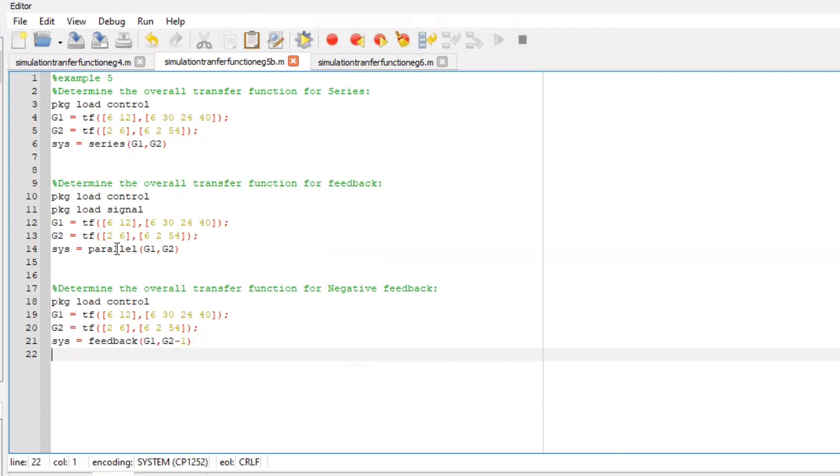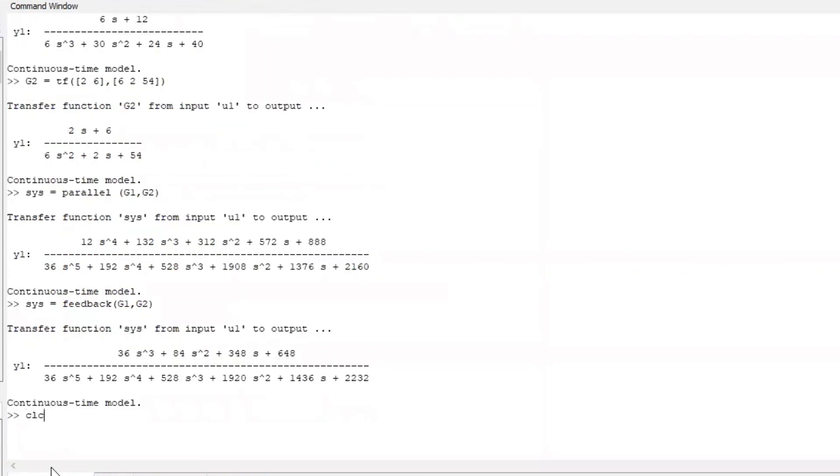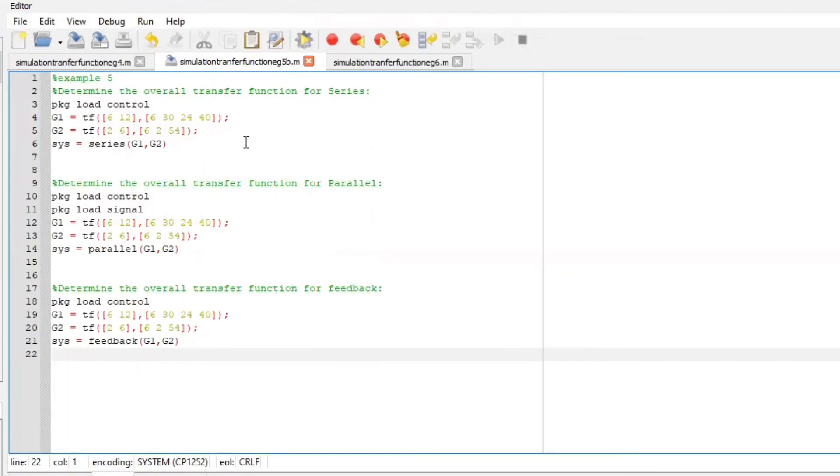So on your editor section you'd incorporate everything. You'd write when it's in series, if it's in parallel. Sorry about that, it's supposed to be parallel. And if it's feedback. Let me incorporate the negatives and positives. So if it's feedback, so this will have to go away. Yep, series, parallel and feedback. So all you have to do is run the file.